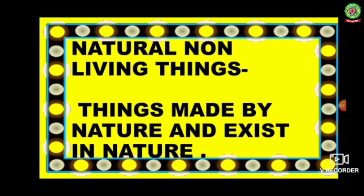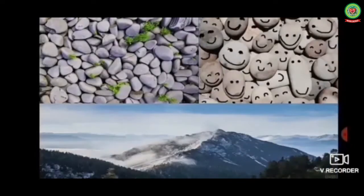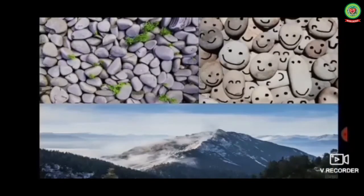Natural non-living things are the things that are made by nature and exist in nature. Examples include soil, water, pebbles, mountains, Sun, and Moon. These all are natural non-living things — they are made by nature and are very important in our life.